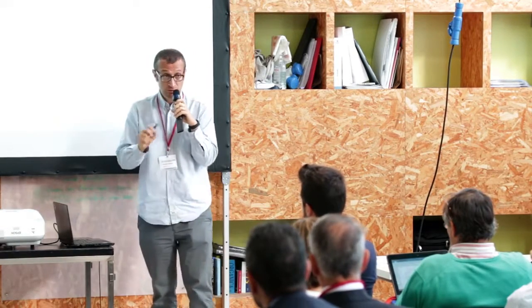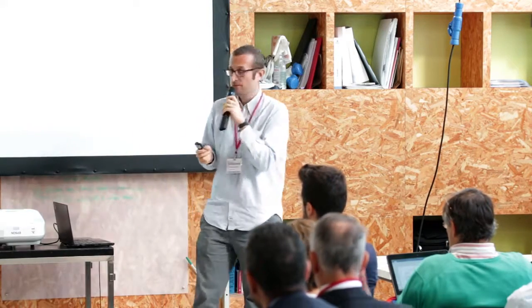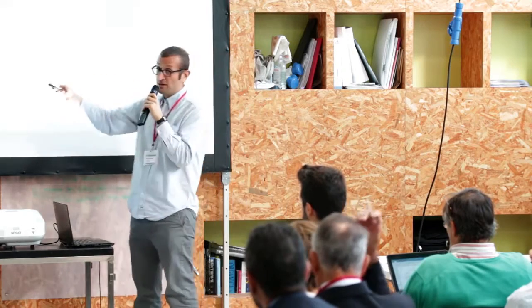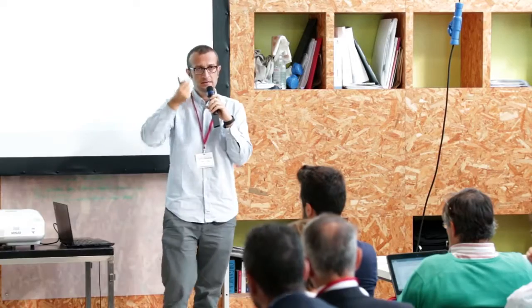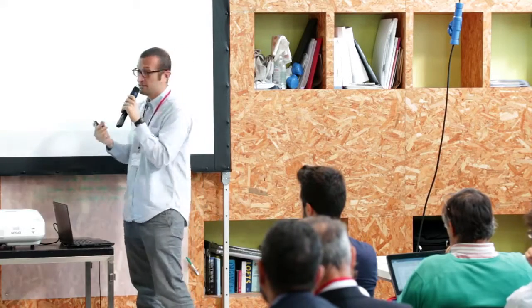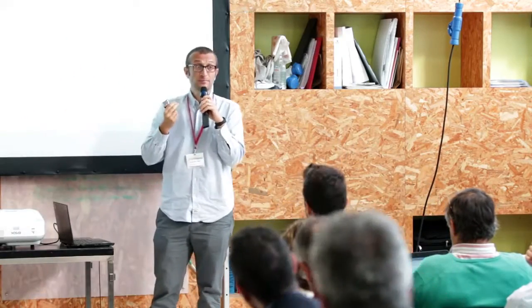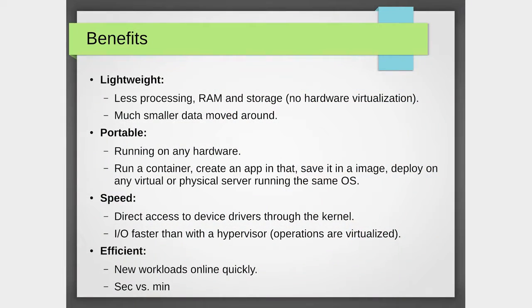Containers are not a replacement for virtualization or virtual machines, and not a replacement for configuration management — they help configuration management. The concept of container image was introduced by Docker in 2014, and that was the killer feature. Basically, you can snapshot a container's file system and then layer by layer declare what bits are needed to have the container you want to deploy, starting from the parent container. Benefits: lightweight means less processing, less RAM, less storage, and small chunks of data — which means less bandwidth.